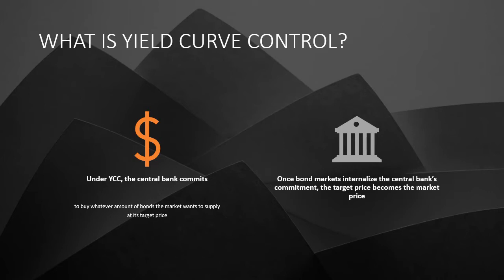Under this YCC policy, the central bank commits to buy whatever amount of bond the market is going to sell at a target price. For example, the Fed might announce and declare that they are going to buy the 10-year Treasury note, the 10-year government bond, at 0% over the 2-year horizon. And effectively, it will become the target price or the market price of the 10-year bond at a lower boundary, because who is going to sell to another private investor if they can sell it at a better price to the Fed? So effectively, once the bond market believes and internalizes the central bank's commitment to honor this yield curve control policy, the target price will become the market price.